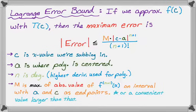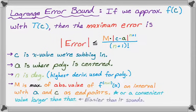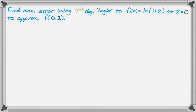Sometimes we just use a convenient value that's actually larger than the true maximum of the absolute value of the (n+1)th derivative on the interval from a to c. Also, it's significantly easier than it sounds — it sounds really confusing, but it's not actually that bad. Let's do an example.